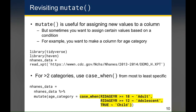What if you wanted to create an age category variable where there's more than two possible categories? When there's only two categories, the if-else function is pretty readable and tends to work the way you expect. However, if you have more than two categories, the if-else function can occasionally give you results that you didn't expect. And so in this situation, the case_when function is preferred.